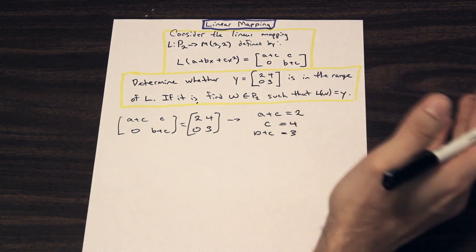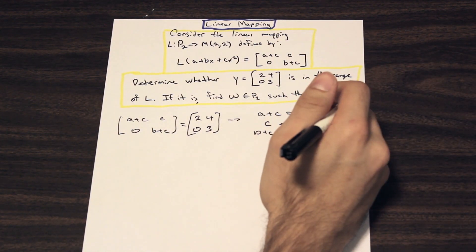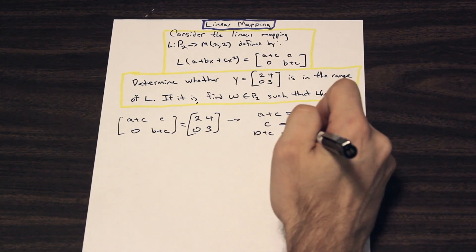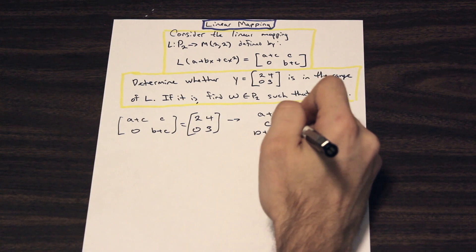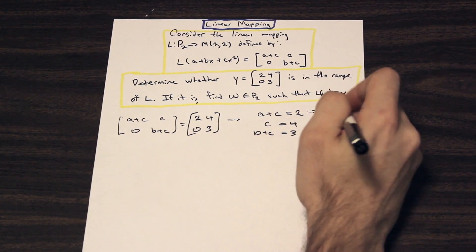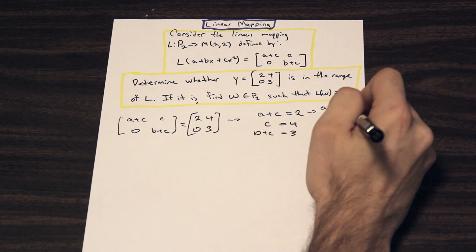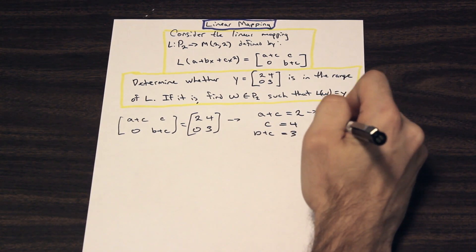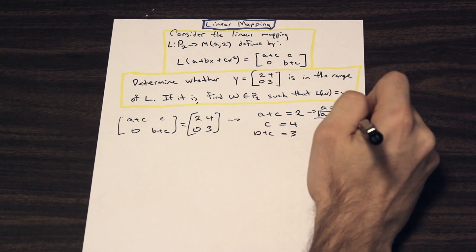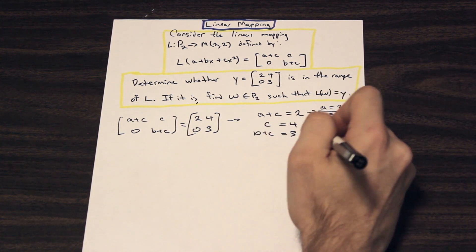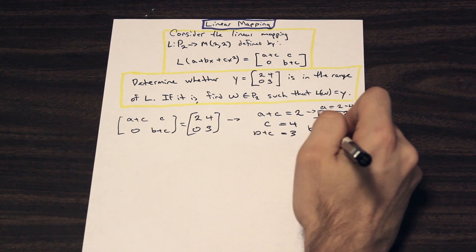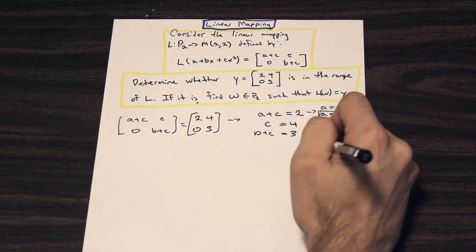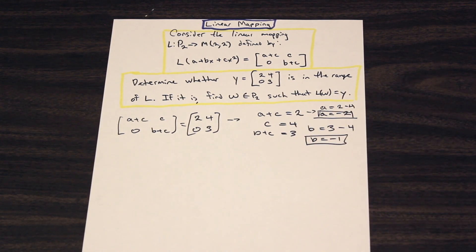So what do we have here? We have a system of linear equations. And what we can do is we can solve this system of linear equations. So we have C is equal to 4, so if we plug that in here, I'll just do it up here. So we have A equals 2 minus 4, so A is equal to negative 2. Perfect. And if we plug C into this bottom equation here, we're going to have B equals 3 minus 4, so B is equal to negative 1.